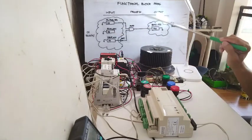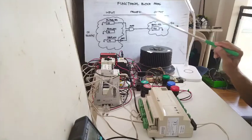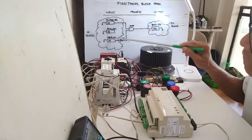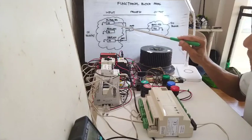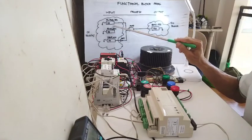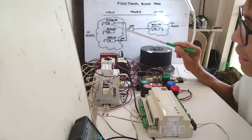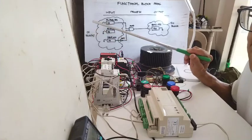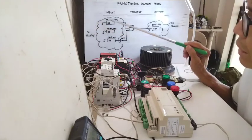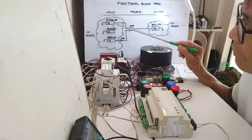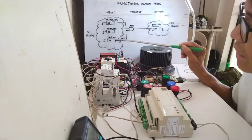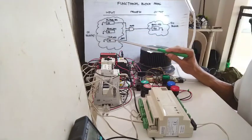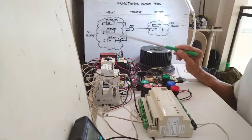In this simple functional block program, I have the inputs on this side. I have a DI block — we need to provide an identifier. In the programmer's point of view, that is like a variable. I have here one, two, three — three DI blocks. DI blocks are digital input blocks.